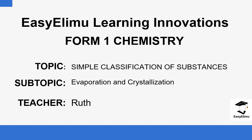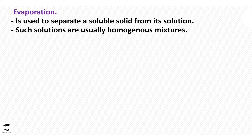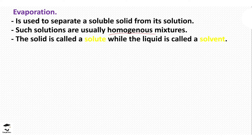Evaporation is used to separate a soluble solid from its solution. Remember we defined what a solution was in the previous lesson. What usually happens is that the solid and liquid mix to form a homogeneous mixture. This mixture is very uniform, and the solid is usually referred to as a solute while the liquid is called the solvent.